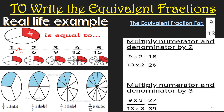Now see the shaded parts visual. The first fraction 1/3 is shaded. For 2/6, we multiplied 1/3 by 2/2, so two parts are shaded out of six total. Multiplying numerator and denominator by 3 gives 3/9 — nine equal parts with only three shaded. For 4/12, multiplying 1/3 by 4/4, the total number of equal parts is 12 and only four parts are shaded.